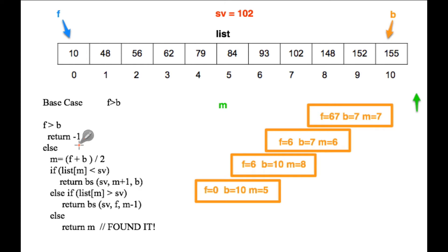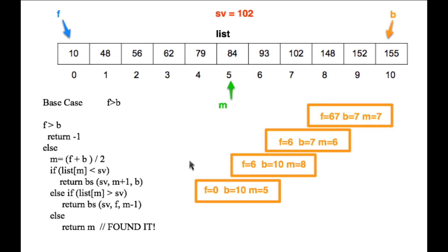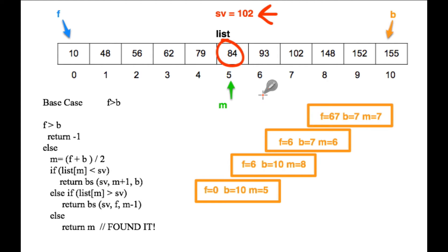Otherwise we're still looking. We calculate m by adding front and back and dividing by 2. Since everything's an integer, this gives us integer division. Using the initial values, m becomes equal to 5: 0 plus 10 divided by 2 is 5. Now we check if list[m] — list[5] — is less than our search value, and it is.